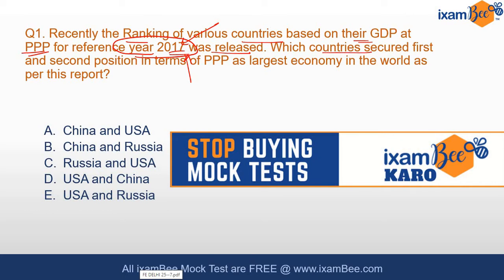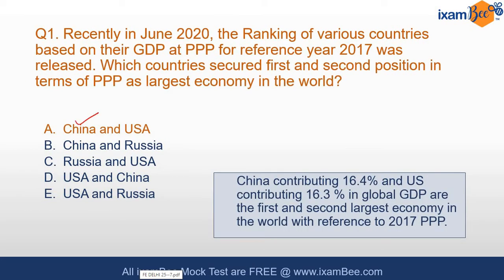The question is: which countries secured the first and second position in terms of PPP as the largest economy in the world? This is a tricky question. The correct answer is China is number one and USA is number two. China contributes 16.4% to the global economy and USA 16.3%. Before this report, USA was number one — if you're reading old or outdated material, you will make this mistake in the exam.